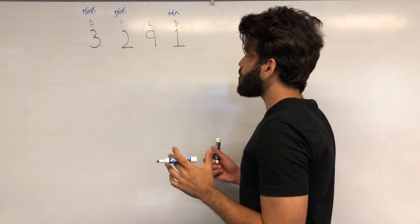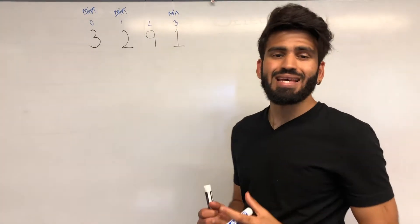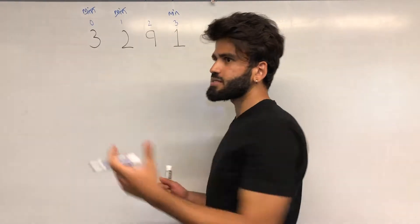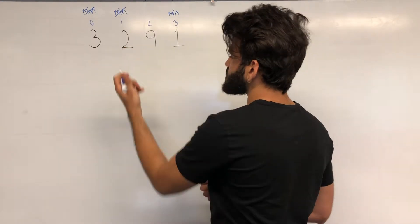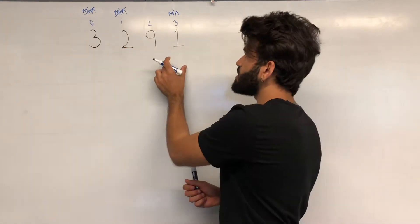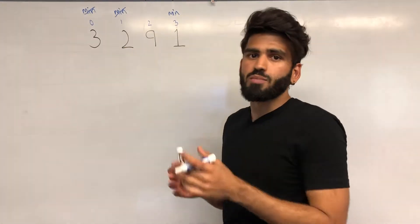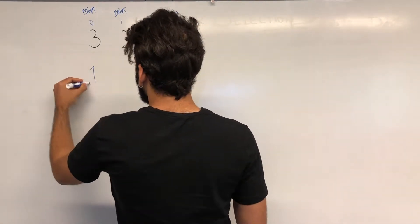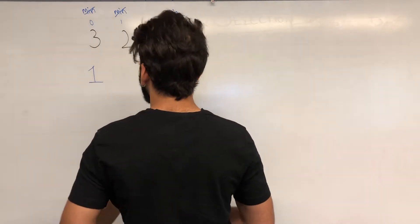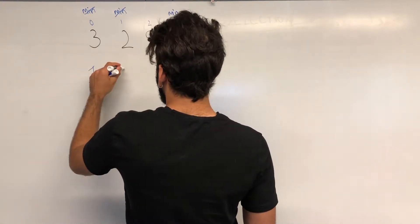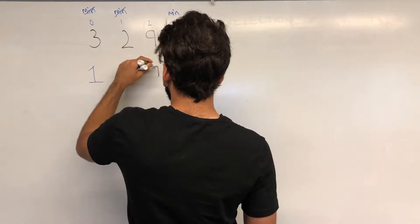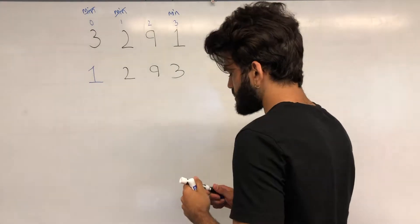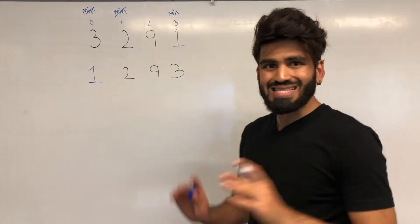Because we're sorting in ascending order, we know that the smallest element's rightful position is the first element. So we simply swap the first element with the value at the minimum index we found. After the first iteration of the algorithm, we will have 1 in its rightful place, followed by 2, followed by 9, and 3 is now in 1's previous position. As simple as that. That is only the first iteration.